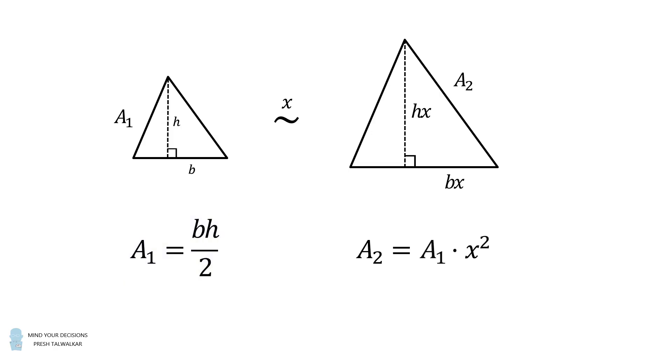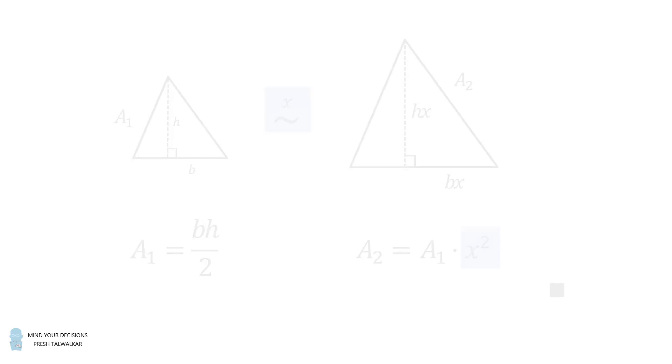This justifies the principle that if the triangles have sides in a ratio equal to x, their areas will be in a proportion that's equal to x squared. So now I will present a solution to the problem.